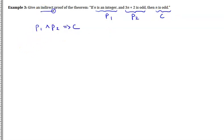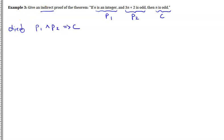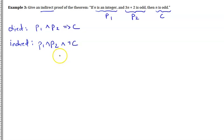Why use an indirect proof? It's useful when direct proofs are not as practical or are messier. For a direct proof, you assume premises are true and show the conclusion follows. For an indirect proof, you take the premises as true, negate the conclusion, and derive a contradiction somewhere along the way.